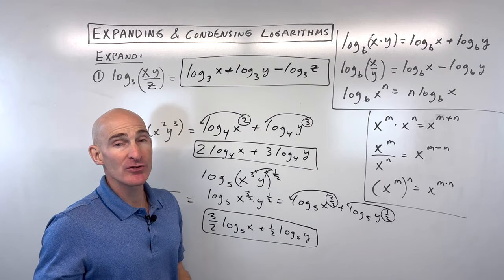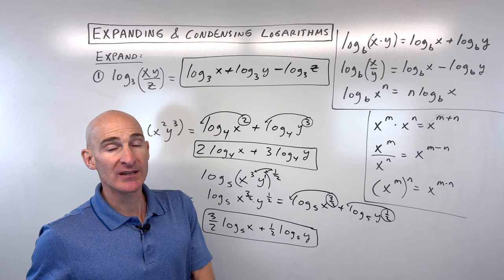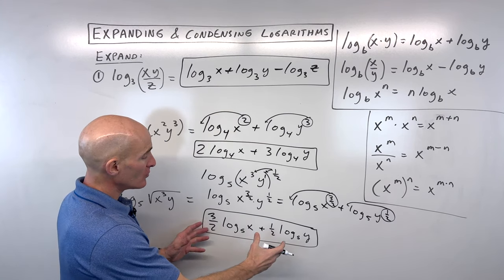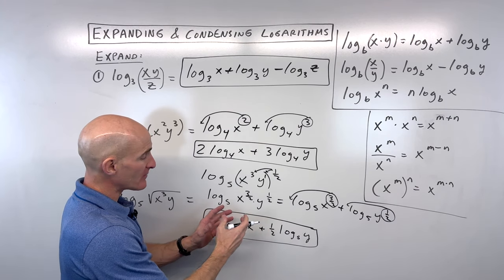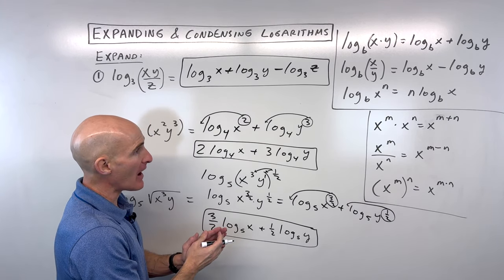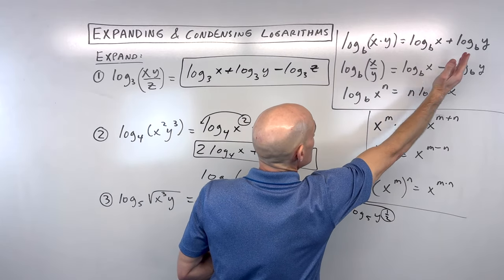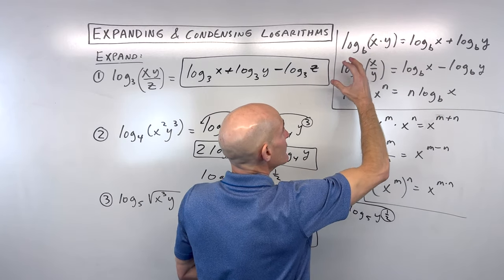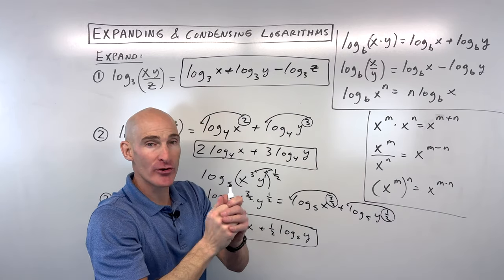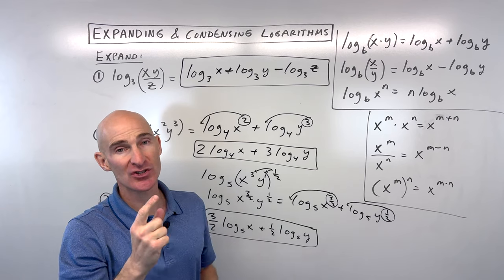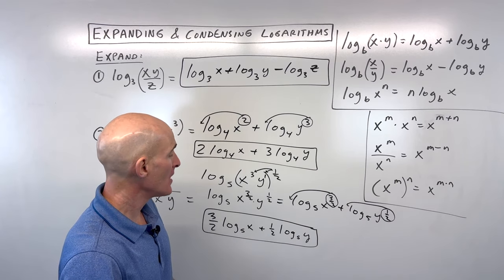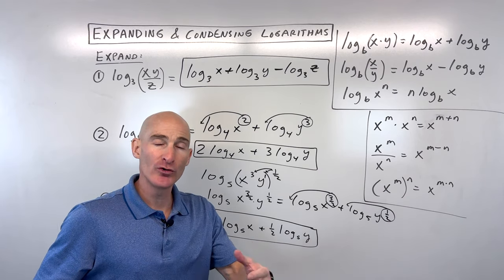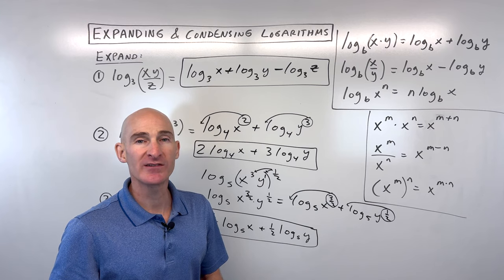In later examples we'll get into condensing. You can reverse those steps — going from left to right is expanding, going from right to left is condensing into just one log. Let's do a few more expanding examples and then we'll do the condensing ones.